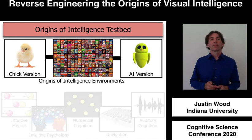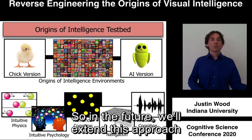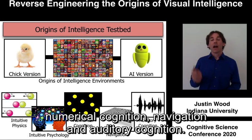Ultimately, our goal is to build integrative models of cognitive development that can explain how a wide variety of abilities develop. In the future, we'll extend this approach to intuitive physics, intuitive psychology, numerical cognition, navigation, and auditory cognition.